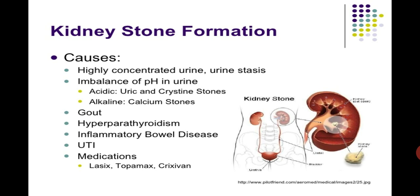Now we will talk about the major causes for the formation of kidney stones. The first cause may include highly concentrated urine and urine stasis. Imbalances of the pH in the urine may create acidic material such as uric acid and cysteine stones.